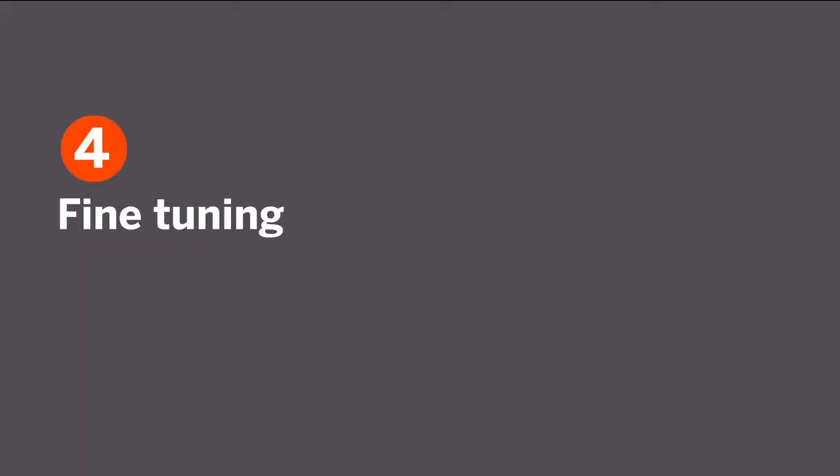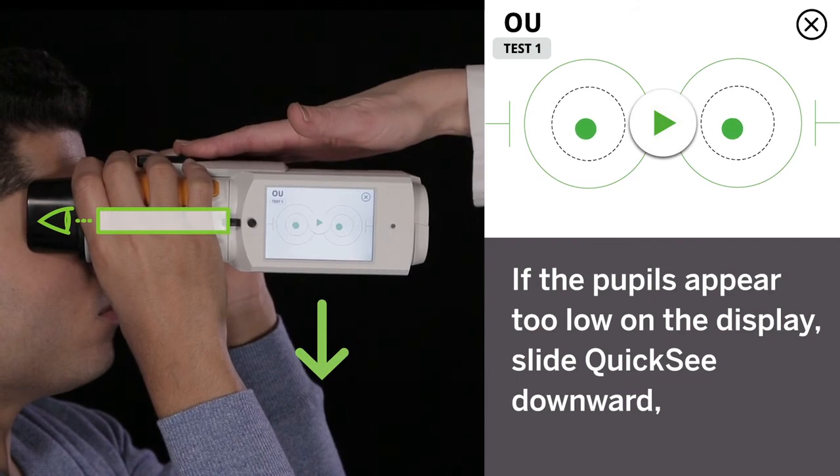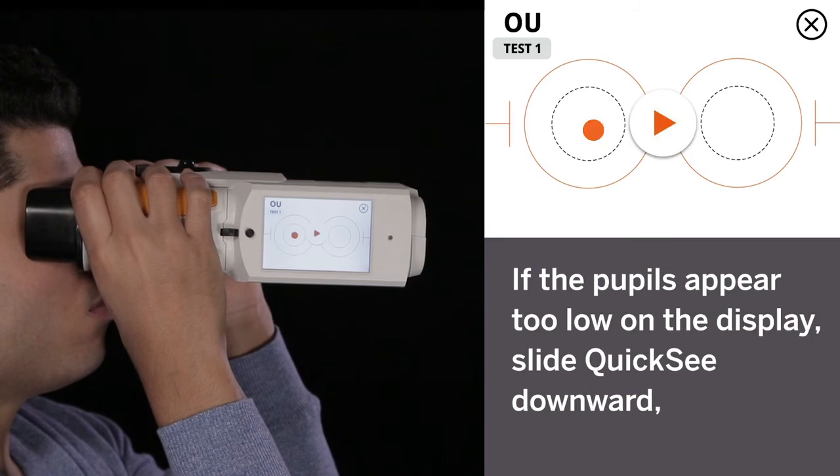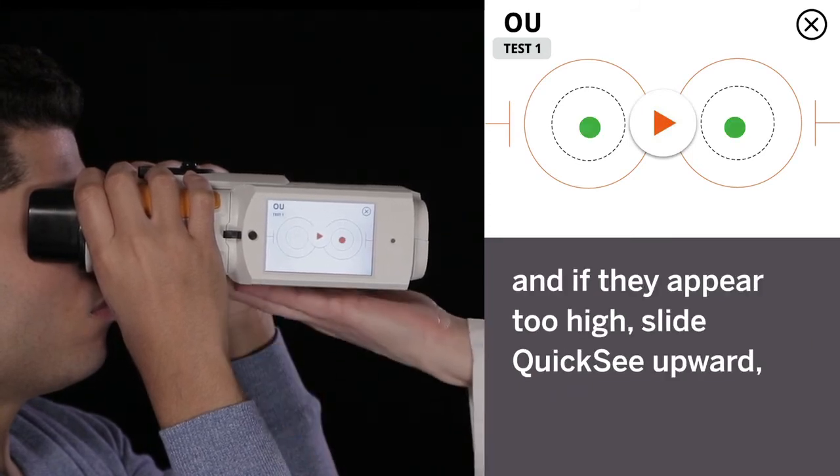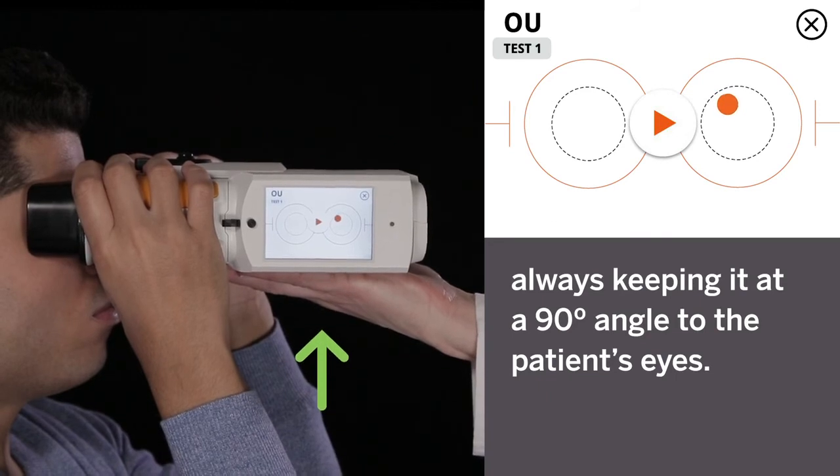Fourth, fine-tuning. If the pupils appear too low on the display, slide QuickSee downward. And if they appear too high, slide QuickSee upward, always keeping it at a 90-degree angle to the patient's eyes.